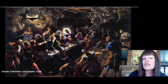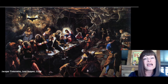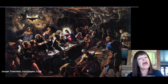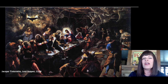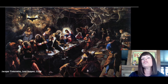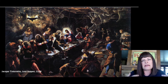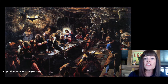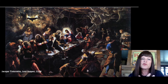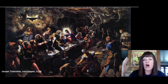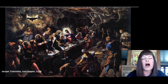Another example is a Last Supper painting by Jacopo Tintoretto, another Italian artist, painted after da Vinci's. Notice how Tintoretto paints it at a diagonal, giving it a very dynamic and exciting appearance. It's not just Jesus and the twelve disciples — there are servants present, a heavenly host swooping in, and all kinds of activity and drama in this Last Supper painting.